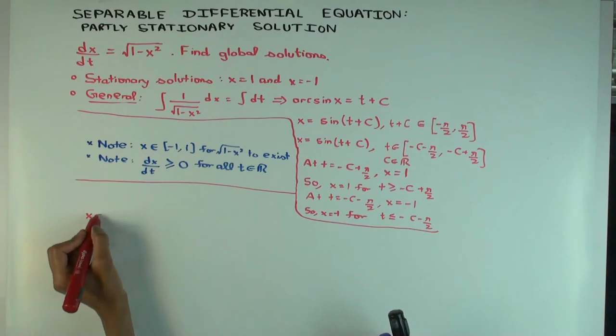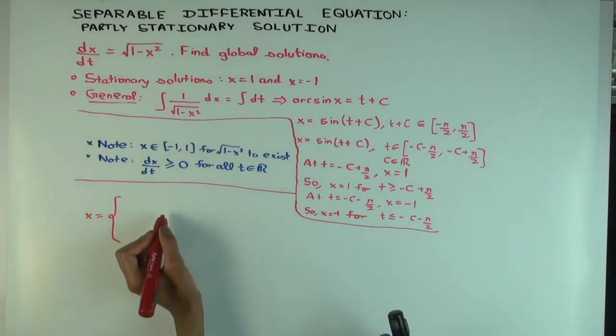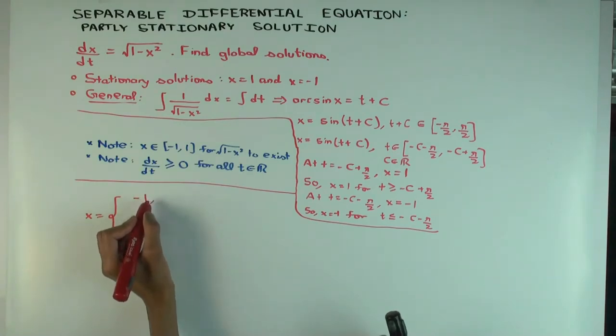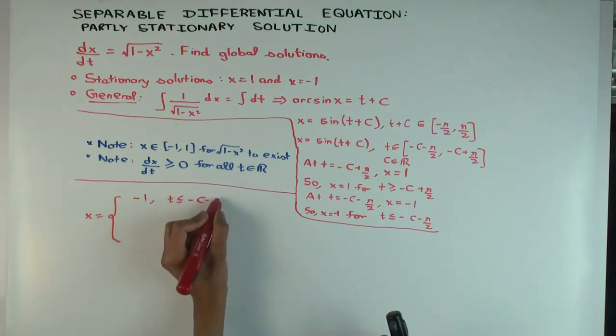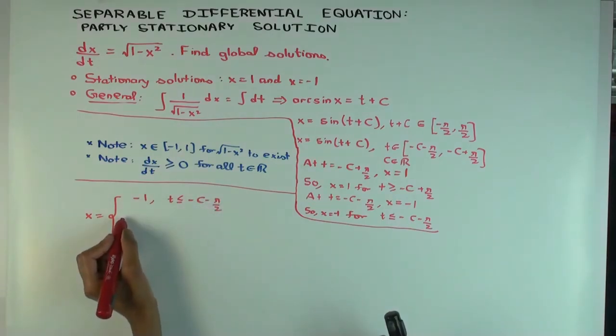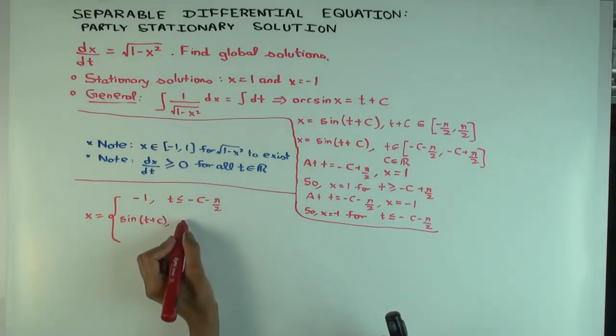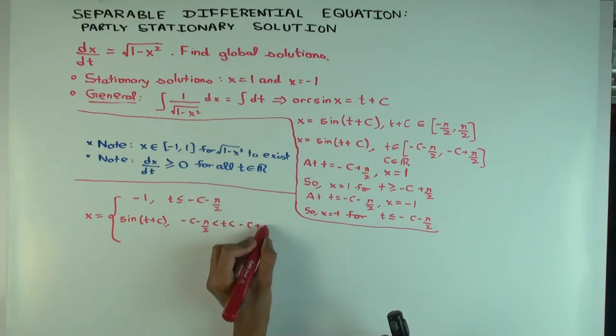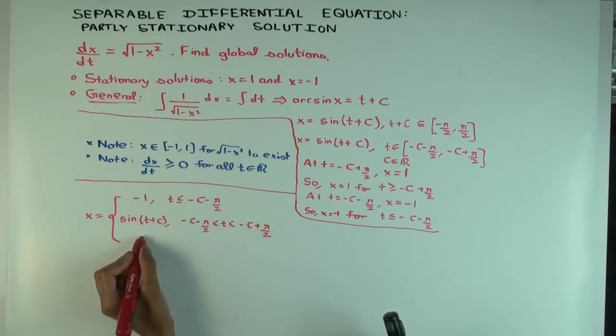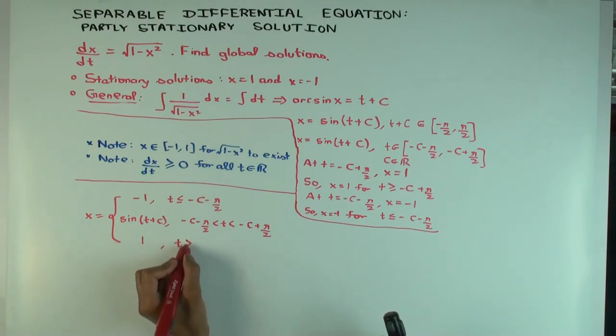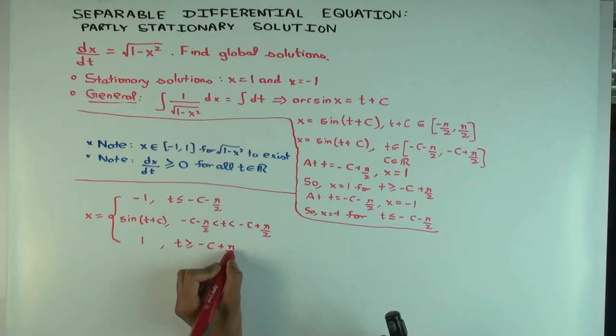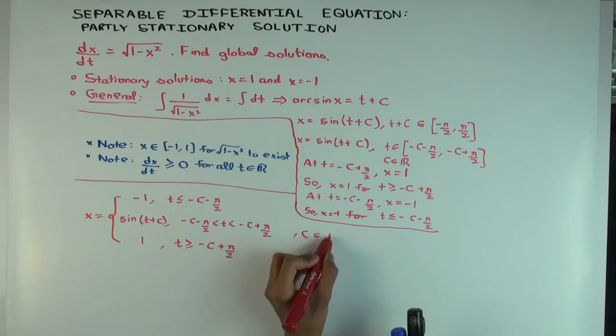So let's write it down. What is the solution? In terms of c, what is the solution? So it's -1 for t ≤ -c - π/2. Then it's sin(t + c) for what? Between -c - π/2 and -c + π/2. And it's 1 for t ≥ -c + π/2.